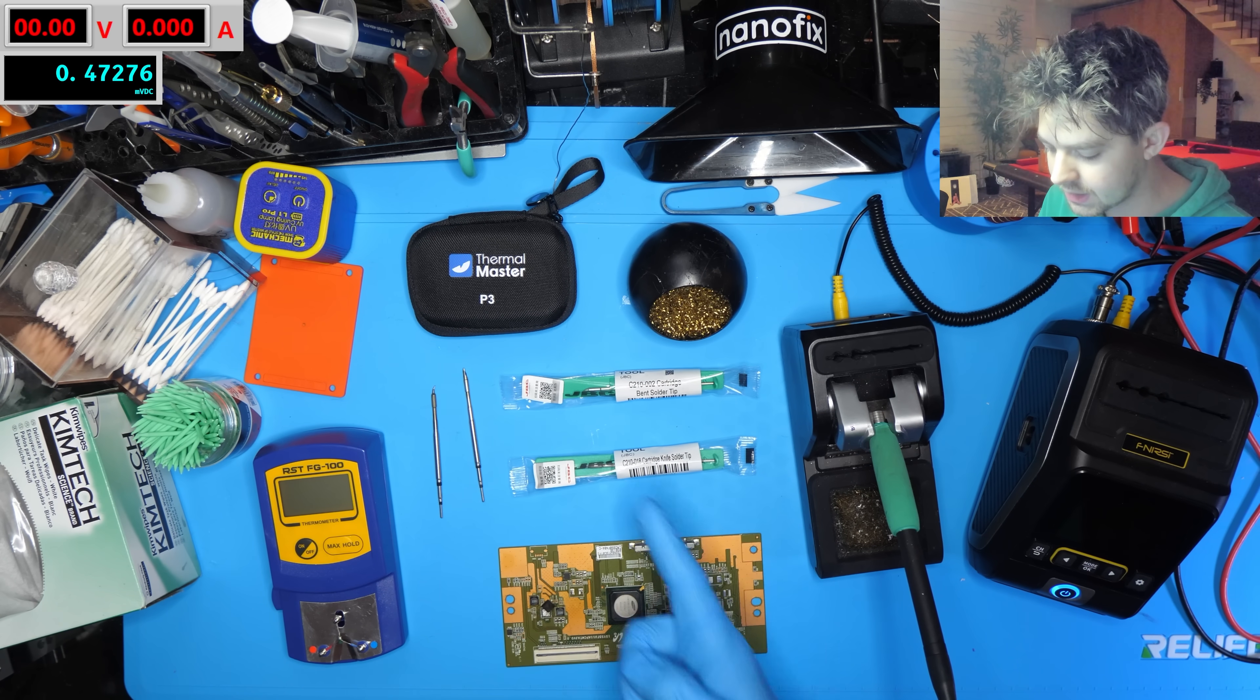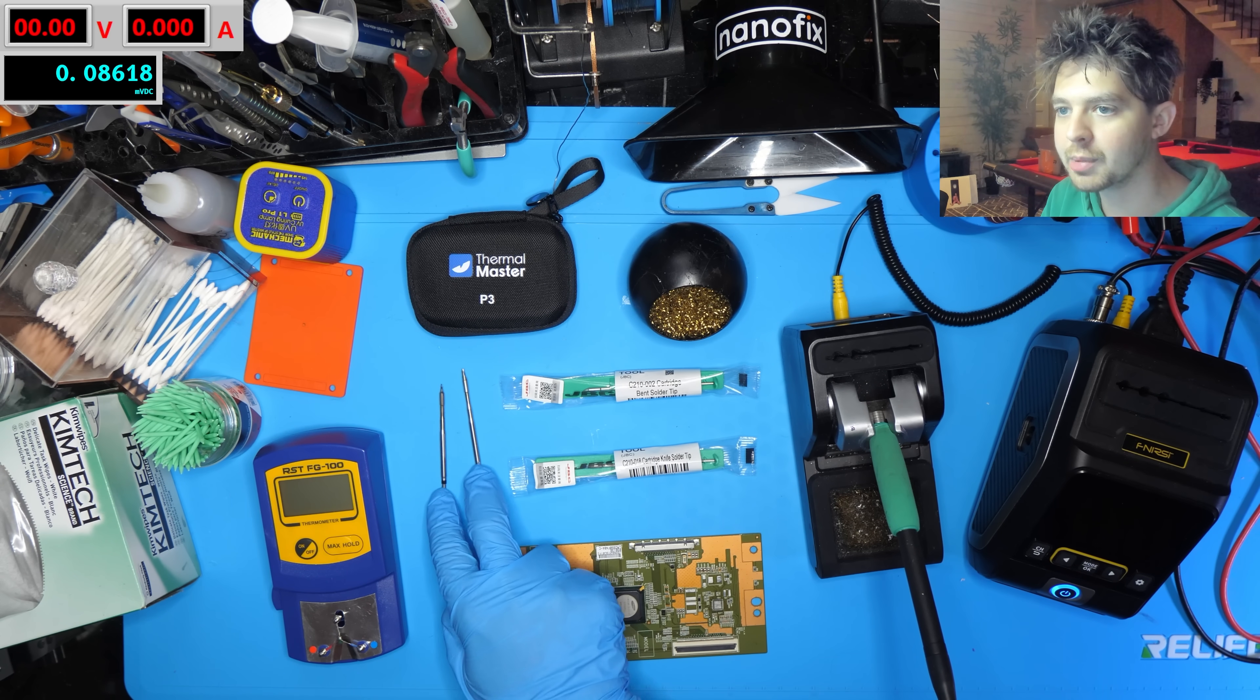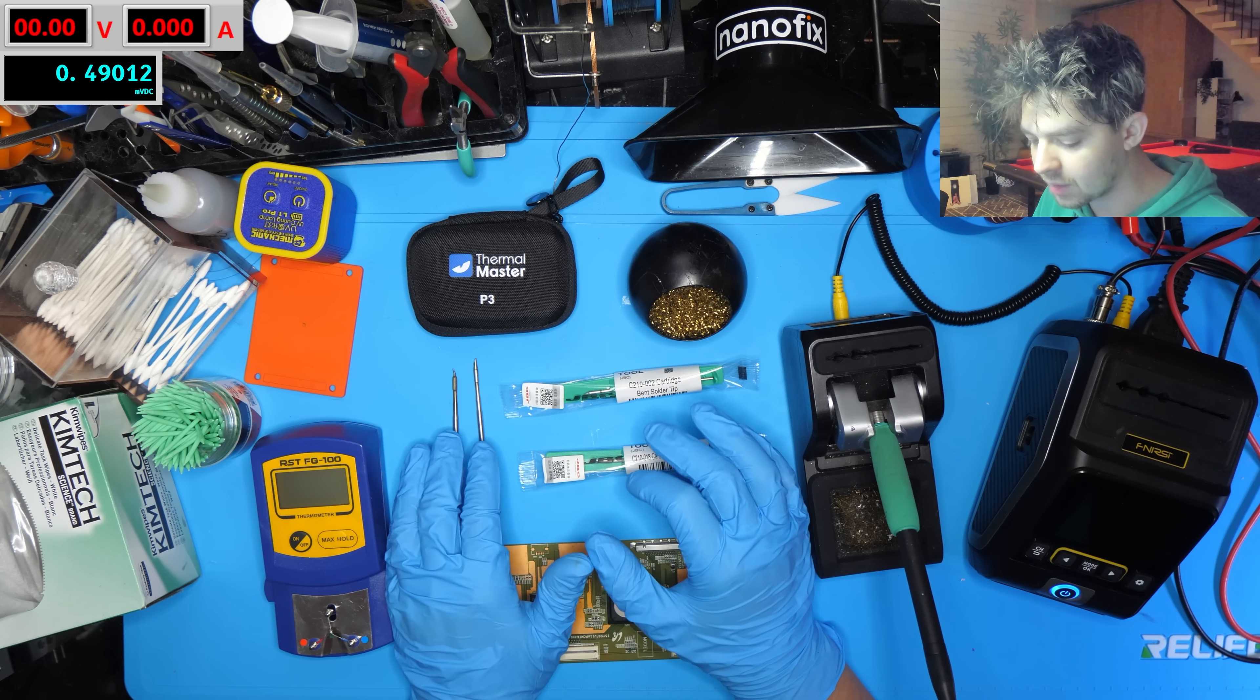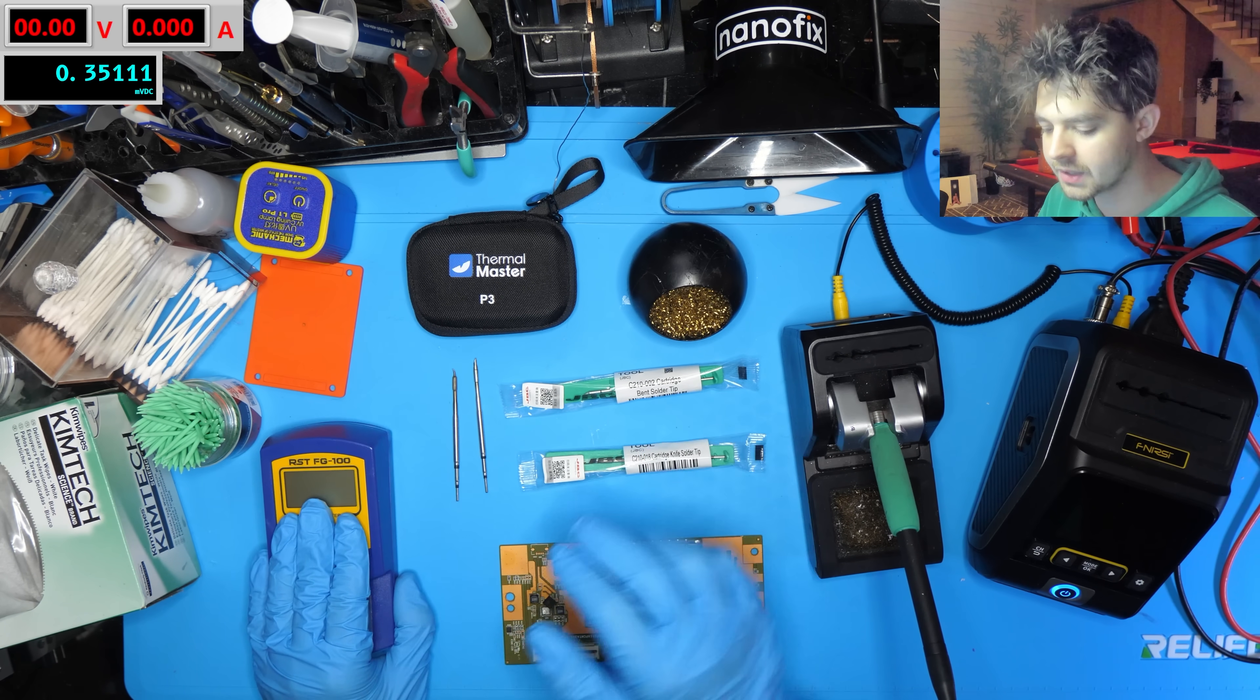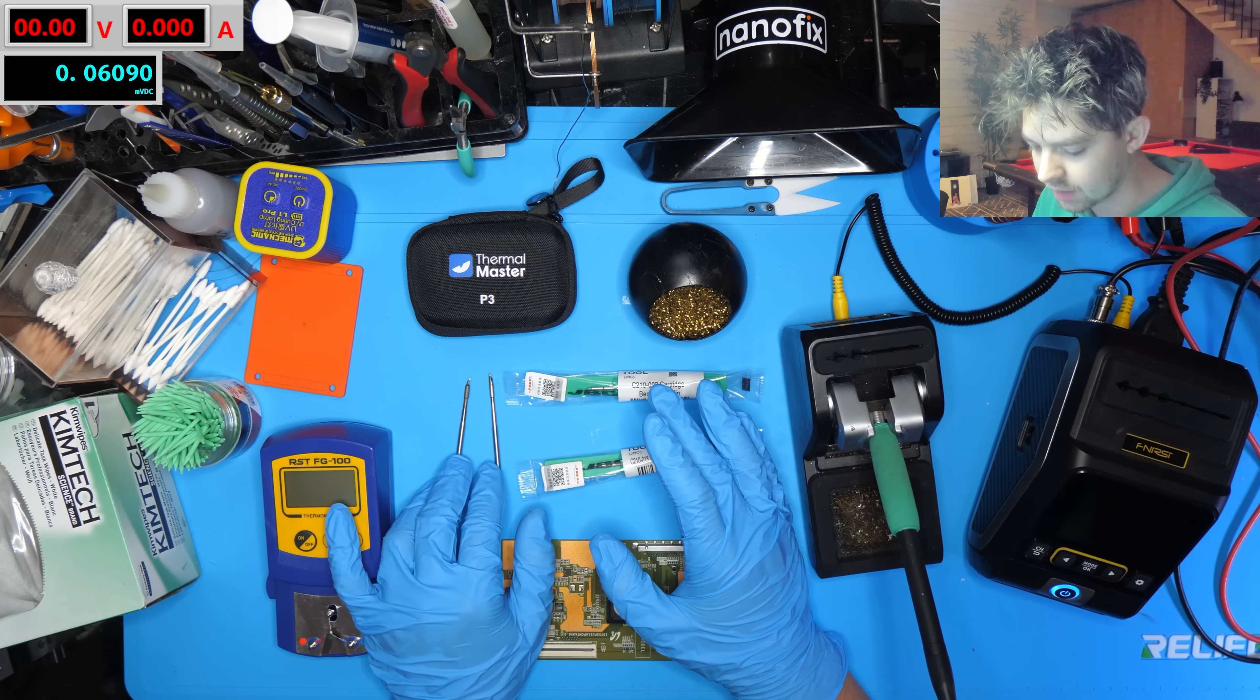Today we're taking a look at some genuine JBC C210 cartridge style tips and how they compare to AliExpress clones like these Frenersee C210 tips that I've been using for quite some time. I'm interested to see how they compare when it comes to the actual temperature of the tips, if the genuine ones are more consistent between the two shapes or if there's not really that big of a difference.